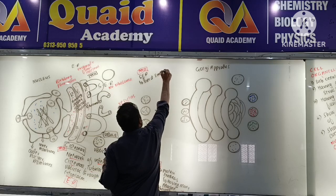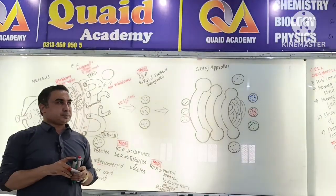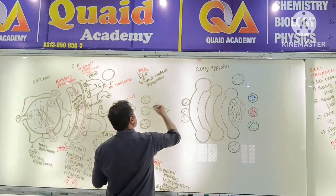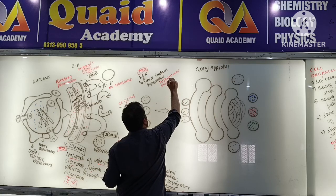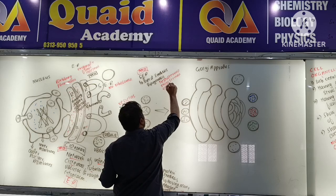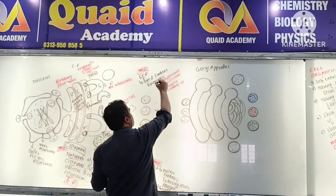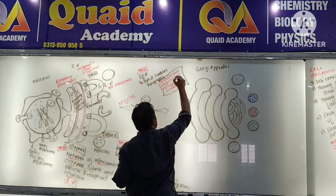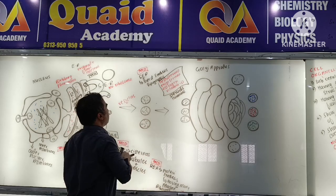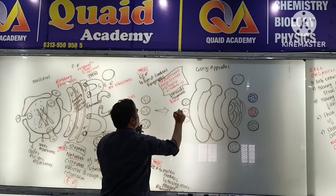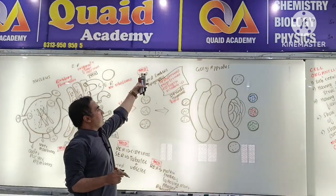The smooth ER is called the site of lipid synthesis — lipogenesis. The steroid hormones such as testosterone, progesterone, estrogen, and vitamin D are all lipid-based steroids. All these steroid hormones are synthesized in the SER.